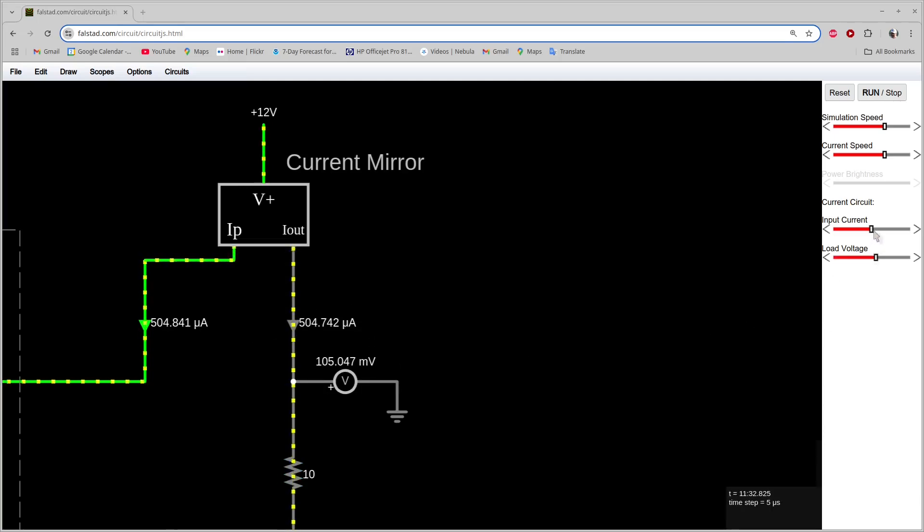If the applied current is tiny, the load current has the same tiny value. If the applied current is huge, the load current has the same huge value. And the load current is ideally independent of the load voltage. It doesn't matter whether the load is up near the positive supply rail or down near the negative one.